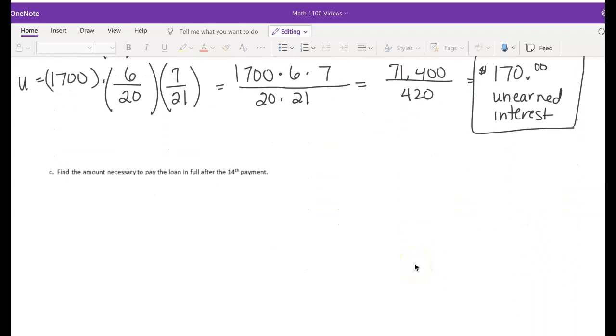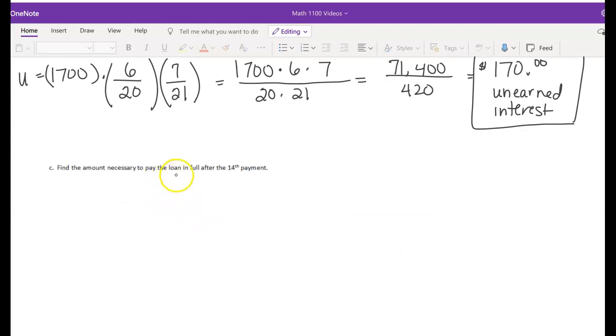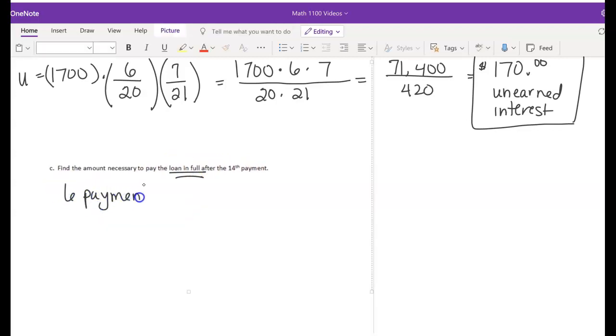Part C. Find the amount necessary to pay the loan in full after this 14th payment. So remember that there are six payments left. So let's calculate how much has to be paid for those six payments. So six payments.